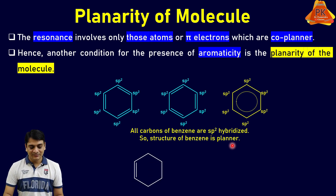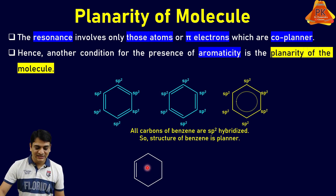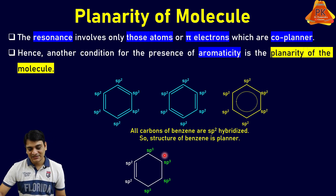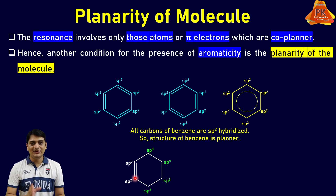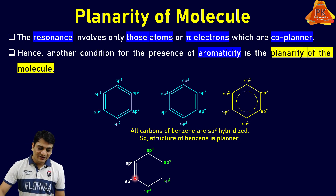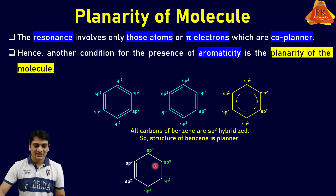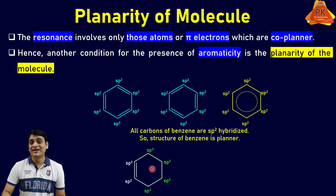Now let's take another example. Here, one double bond is present between two carbon atoms and the remaining are only single bonds. So these two carbon atoms are sp2 hybridized, while the remaining four carbon atoms are sp3 hybridized. The two sp2 carbons may be present in a single plane, but the four sp3 carbons will not be, because their structure is three-dimensional. Therefore, aromaticity is not possible in this structure since it does not follow the rule of planarity.